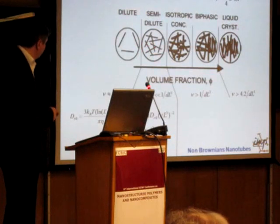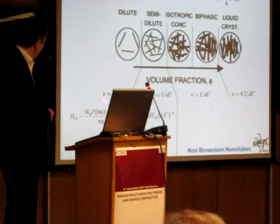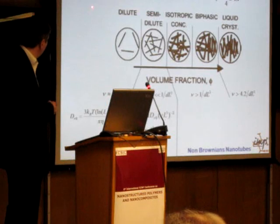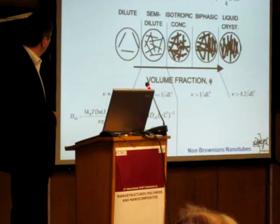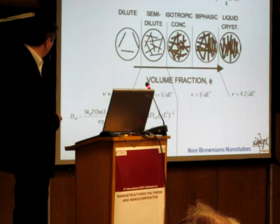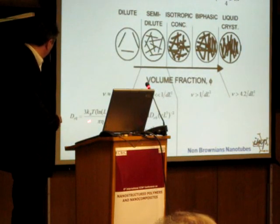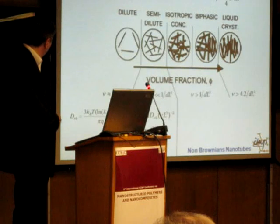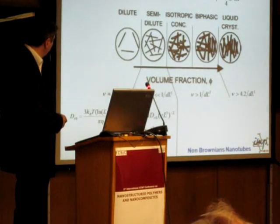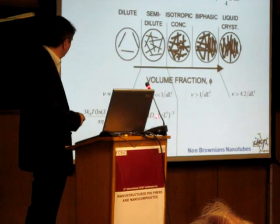So a few equations. The transition here between dilute and semi-dilute is defined by this equation. Nu is the number of molecules per unit volume of solution. And beta is a theoretical parameter, it's close to 30. And you can calculate, of course, the rotary diffusion in dilute suspension and the rotary diffusion of nanotubes in semi-dilute regime.